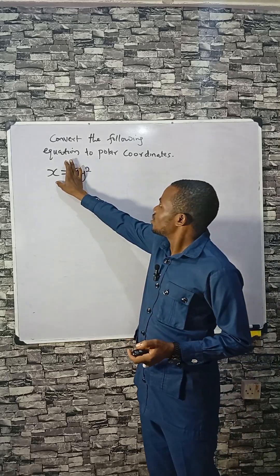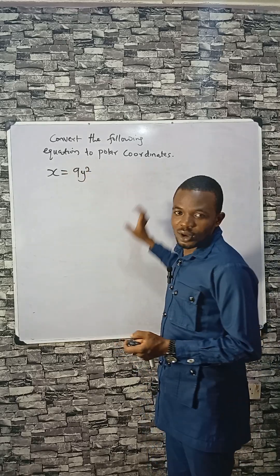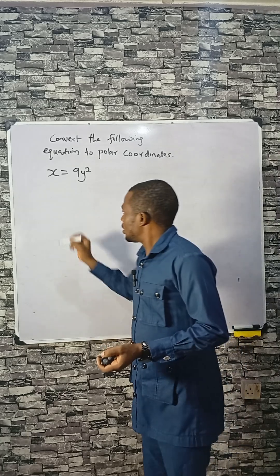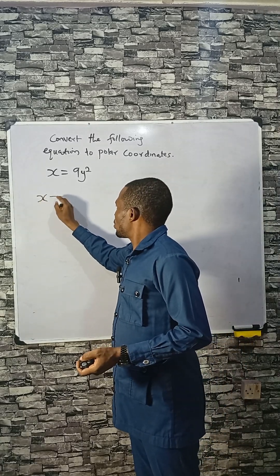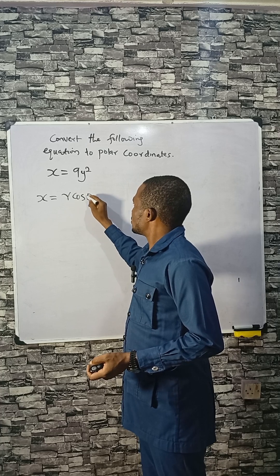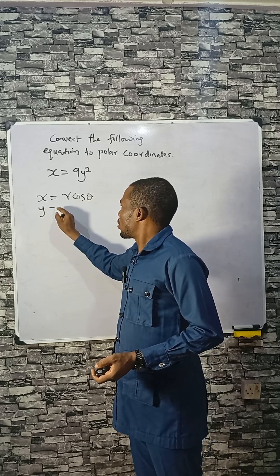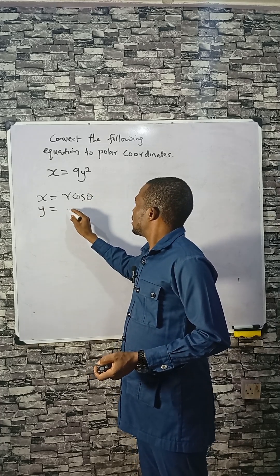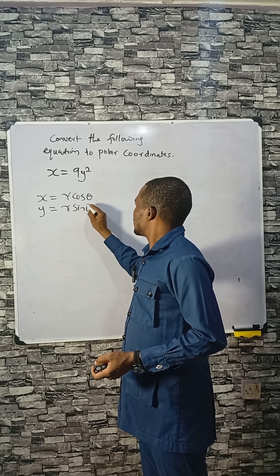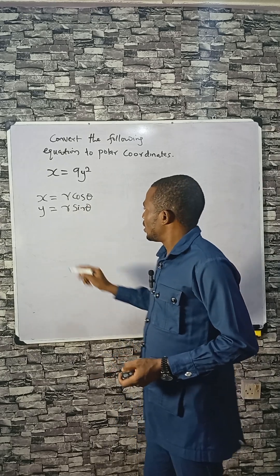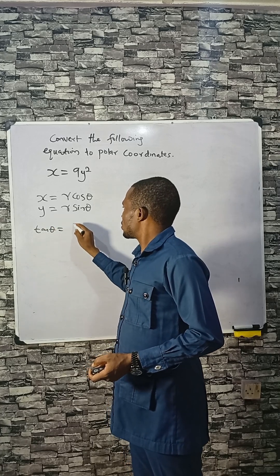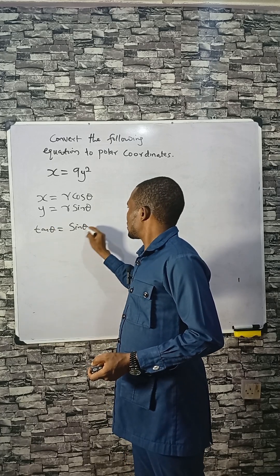We are asked to convert this equation to polar coordinates. The X coordinate will always take R cosθ, and the Y coordinate will take R sinθ.